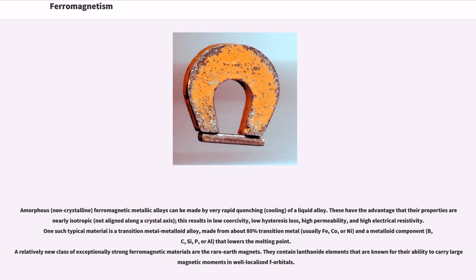Amorphous, non-crystalline, ferromagnetic metallic alloys can be made by very rapid quenching, cooling, of a liquid alloy. These have the advantage that their properties are linearly isotropic, not aligned along a crystal axis. This results in low coercivity, low hysteresis loss, high permeability, and high electrical resistivity.